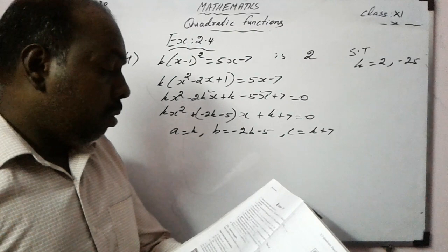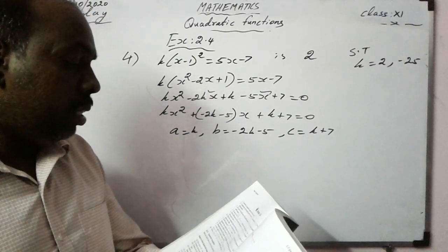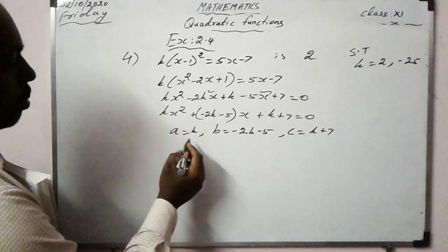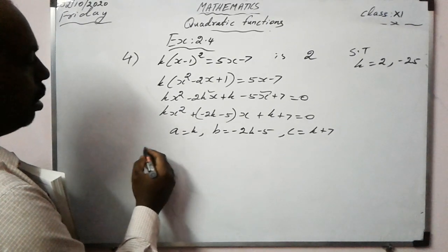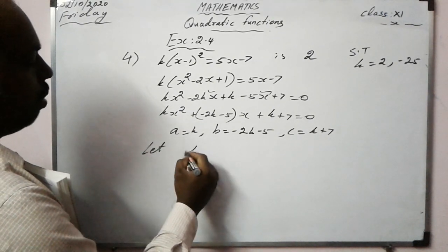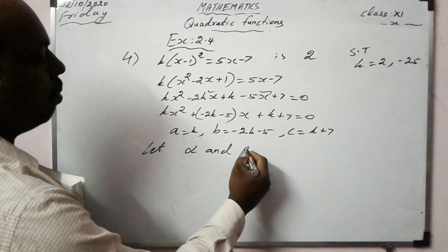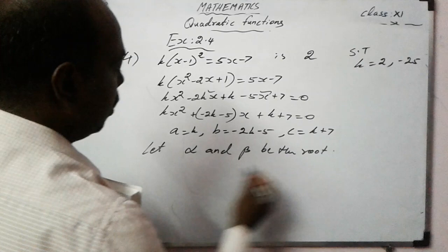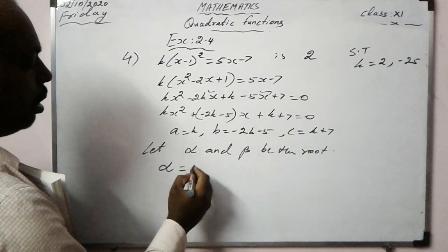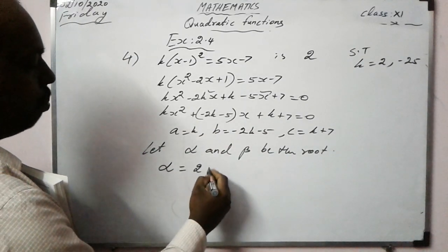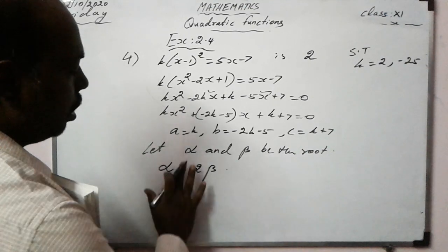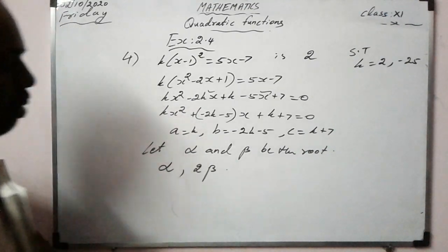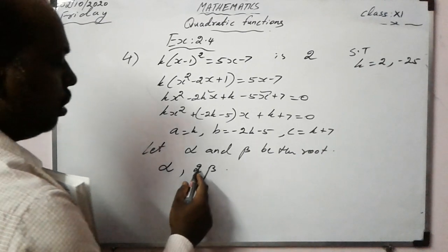Since one root is double the other, let the roots be alpha and 2·alpha.